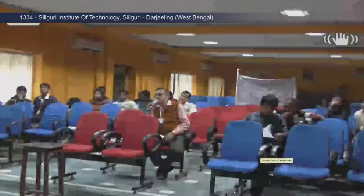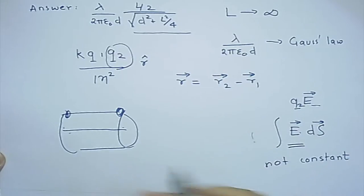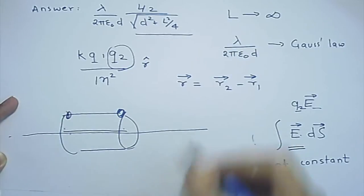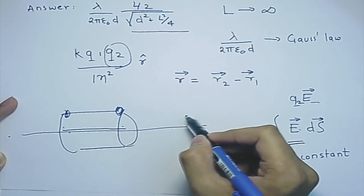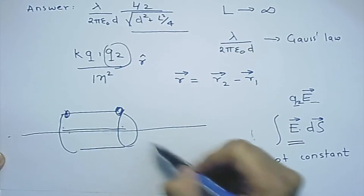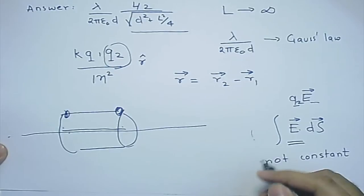For an infinite line charge, full cylindrical symmetry exists and Gauss's law is applicable. For a finite line charge, the symmetry is broken at the boundaries, so Gauss's law cannot be used to directly compute E. The integral form of Gauss's law cannot simplify because E is not uniform over the Gaussian surface.